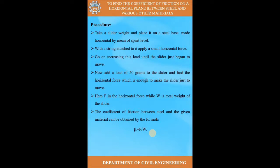Initially you will notice there is no motion in the slider. Gradually increase the load and note whether the slider moves or not. A time will come when, upon increasing the load, the slider will just start to move. At this point, note how much weight you have put on the hanger. You have also taken the weight of the slider using a digital balance. The ratio of force to weight gives you the coefficient of friction. If the surface is smooth, a small force is required; if rough, a large force is required.